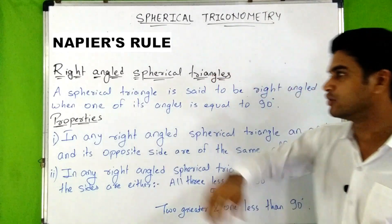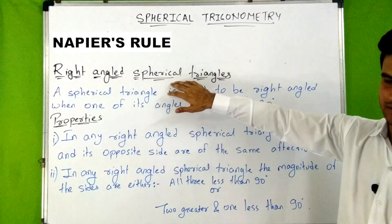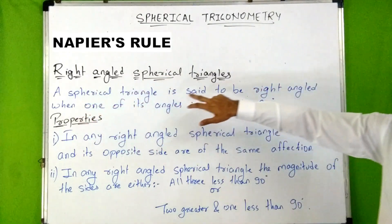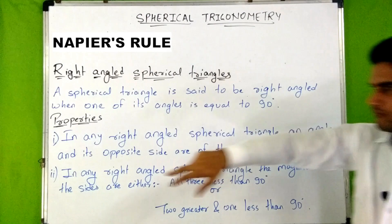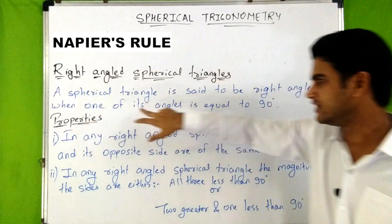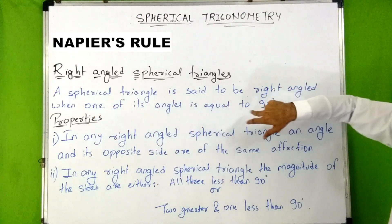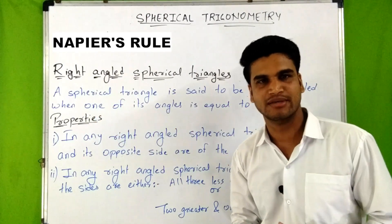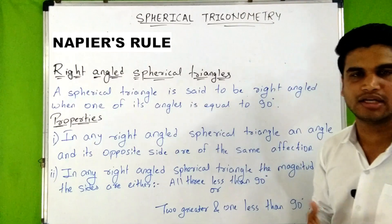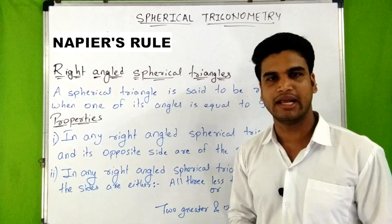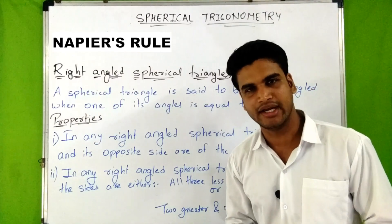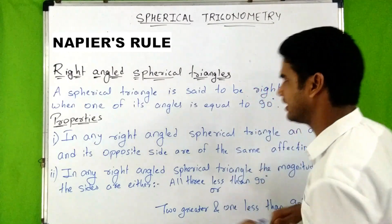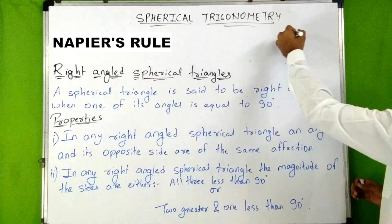First we will discuss about right-angled spherical triangles. A spherical triangle is said to be right-angled when one of its angles is equal to 90 degrees. So if an angle in a spherical triangle equals 90 degrees, that spherical triangle is known as a right-angled spherical triangle.